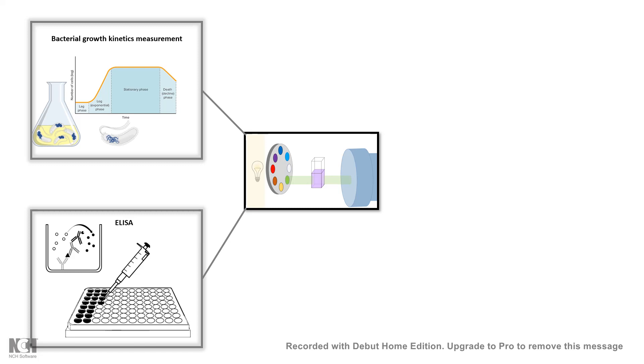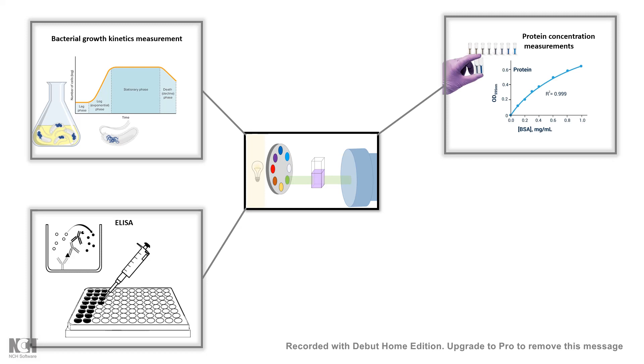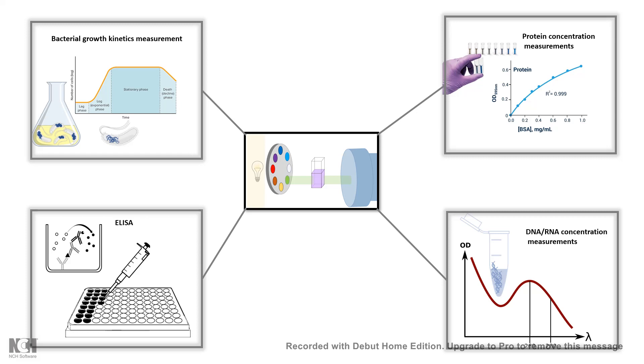It could be used for ELISA for measurement of several disease diagnosis and cytokine measurement, etc. It can be used to check protein concentration, check the concentration of nucleic acid and purity of the nucleic acid, and many more. So let's talk about a little bit of their usage.